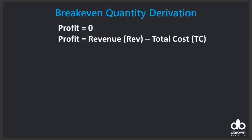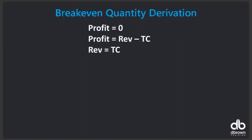Break-even quantity: if your profit is zero, then profit equals revenue minus total cost. If profit is zero, revenue equals total cost. Revenue is price times quantity. Your total cost will be price times quantity. So at break-even, your revenue — which is break-even price times quantity — equals total cost. Your break-even price is the price at which you break even.